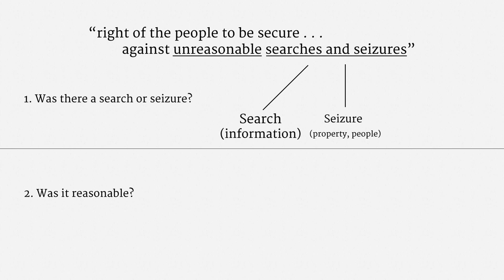In the next lecture, we're going to dig into the specific tests for whether a search has occurred. There's a final category here — government conduct that's neither a search nor a seizure. Historically, the Supreme Court used this category a lot: either something was a search and seizure with all the usual trappings, or it was totally outside the Fourth Amendment. In particular, we're going to soon see how metadata falls into this category. The modern trend, by contrast, is to find a search or seizure but to apply some lesser requirements.